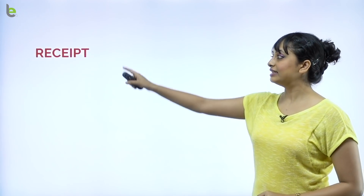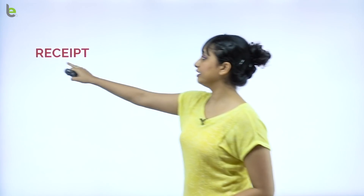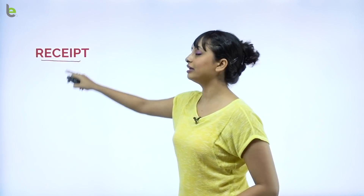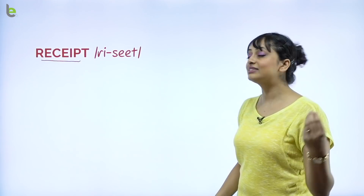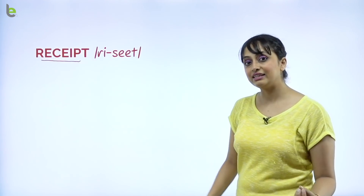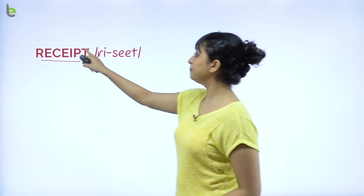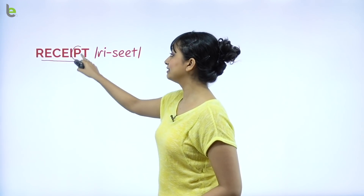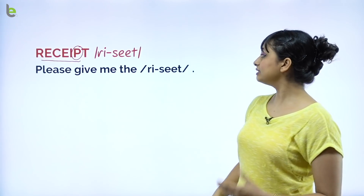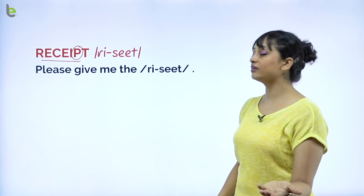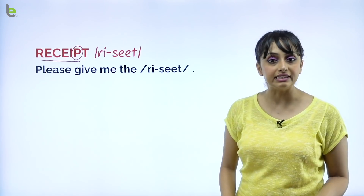The next word is one where we will learn another silent letter. Which letter is it? Receipt — the P is silent. Receipt. For example: Please give me the receipt.